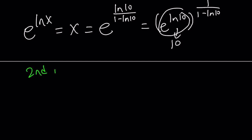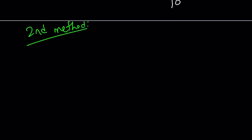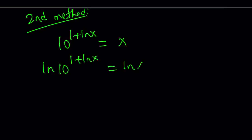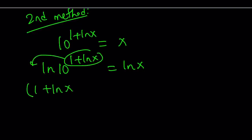For the second method, instead of logging both sides — and I'm going to rewrite the original equation: 10 to the power 1 plus ln x equals x — I'm going to ln both sides. That kind of makes sense, because we have ln x in the exponent, so they both make sense. And then like before, bring this down. But this time, ln 10 is not going to be 1, because they're different numbers. This is base e and that's 10.